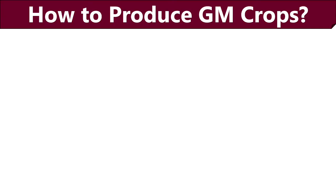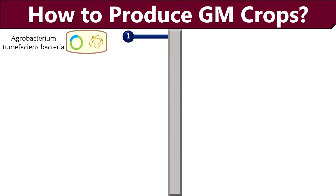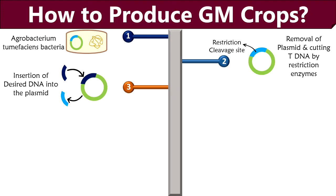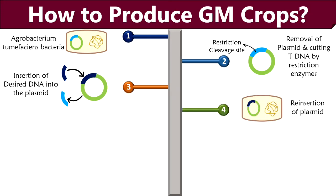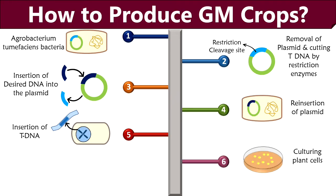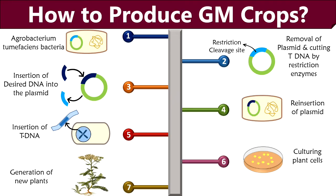Let us discuss how genetically modified crops are produced. For production of GM crops, both direct and indirect methods are available. Here, we will discuss the indirect method that uses vectors for genetic transfer. Agrobacterium consists of a circular DNA known as a plasmid. This plasmid is removed from the bacteria and the T-DNA region is cut with the help of restriction enzymes. In the next step, the desired DNA is taken and inserted into the cleaved part of the DNA. The fourth step is the reinsertion of the plasmid into the bacterium. Later, the bacterium is allowed to attack the plant. During this process, the bacteria transfers its genetic material into the plant along with our desired fragment of gene. In this way, the desired gene is incorporated into the chromosomes of the plant cell. The plant cells are then grown in a culture medium under controlled conditions. Finally, the plant is generated that carries the foreign gene and may express it as a new trait.